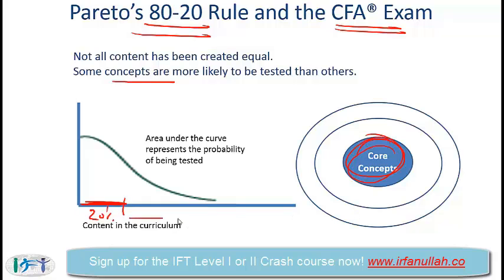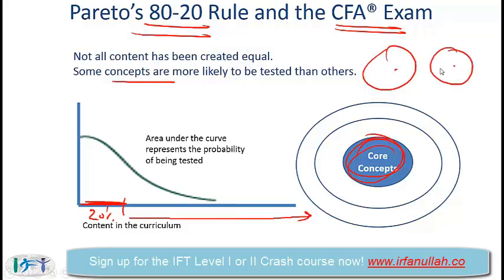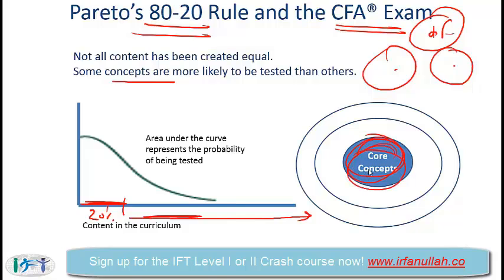The curriculum also has a tremendous amount of additional material. For example, going back to hypothesis testing, you will have the test which compares the means of two populations where the variance of the populations is not the same. There you will have a complicated t-test and a complicated formula for the degrees of freedom. That takes a lot of effort to learn but it is not a core concept — it can be tested, but the probability is low.